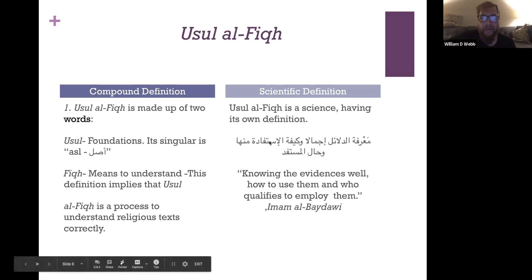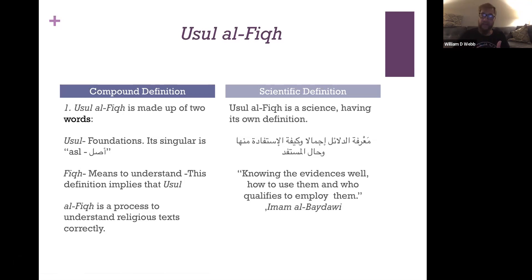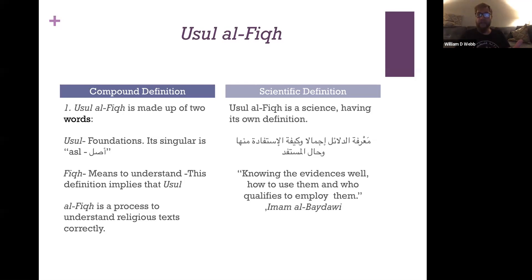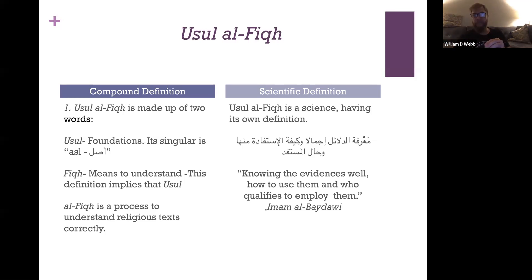When al-Baydawi says kayfiyyat al-istifada minha — how do you benefit — that implies that if someone doesn't know how to use these evidences, they won't make istifada, they'll make fasad — corruption. If I don't know how to use the evidences correctly, I may actually contribute to corruption. Importantly, he doesn't say the conditions of the 'alim — he says the conditions of the mustafid, an active participle — what are the academic qualifications needed for somebody who brings benefit to people?